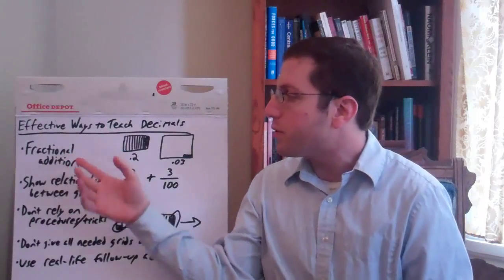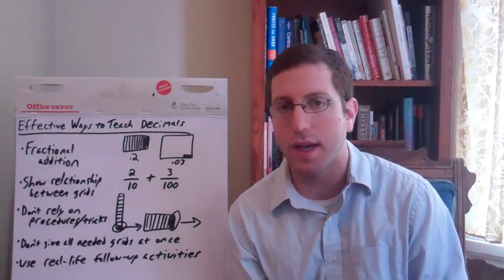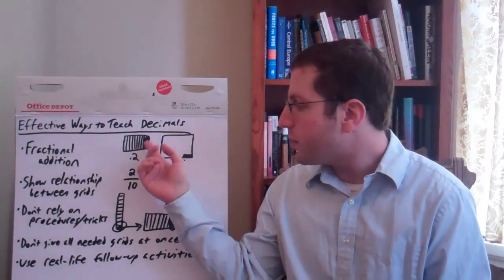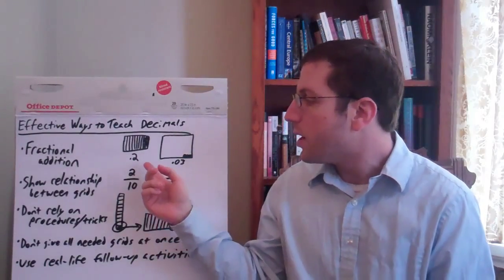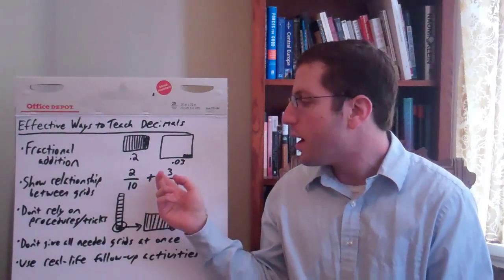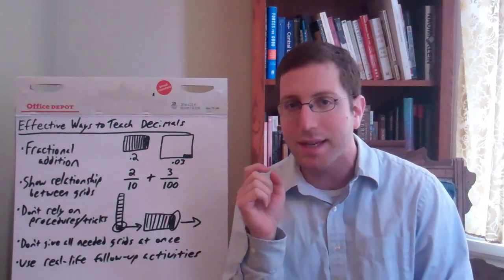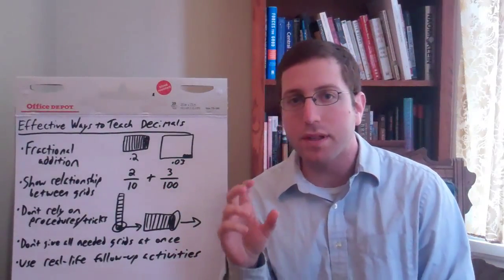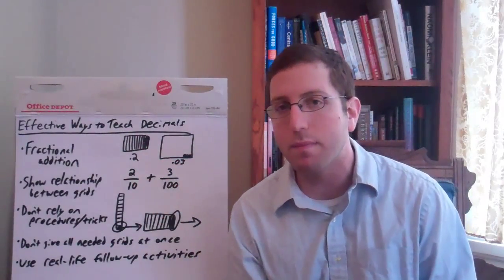First is to really help students represent this in terms of fractional addition. All that means is that if you've got two tenths and three hundredths, you can actually think about that as literally writing it as two tenths, two over ten, plus three over a hundred, plus three hundredths. But having that addition sign, it seems simple, but it's a critical link between these two grids which a student might not otherwise be able to make.